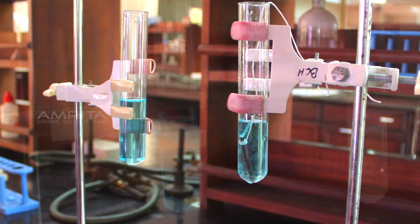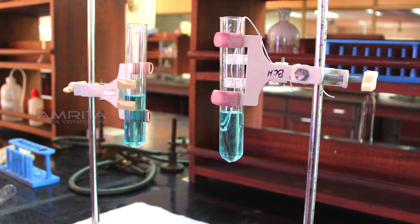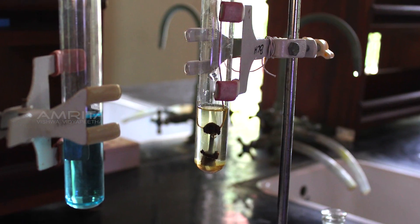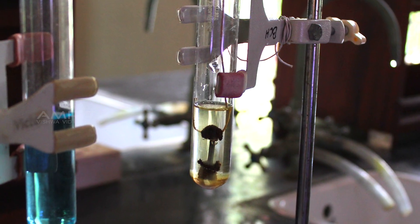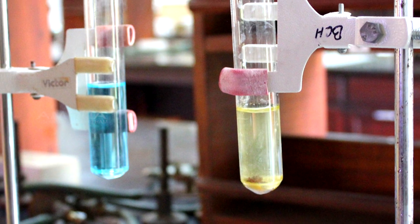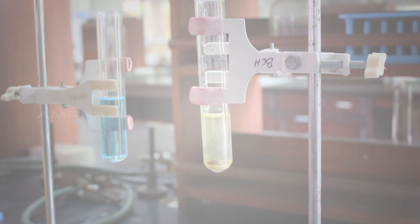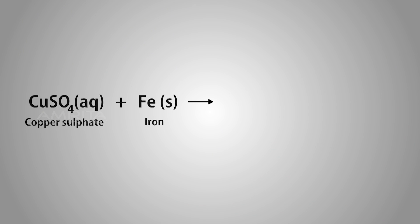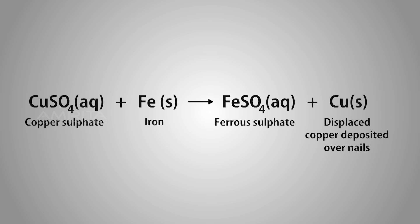The change of colour from blue to green of the solution in which the iron nail was dipped indicates a chemical change in which copper has been displaced by iron from the copper sulphate solution and a new compound, FeSO4, is formed.